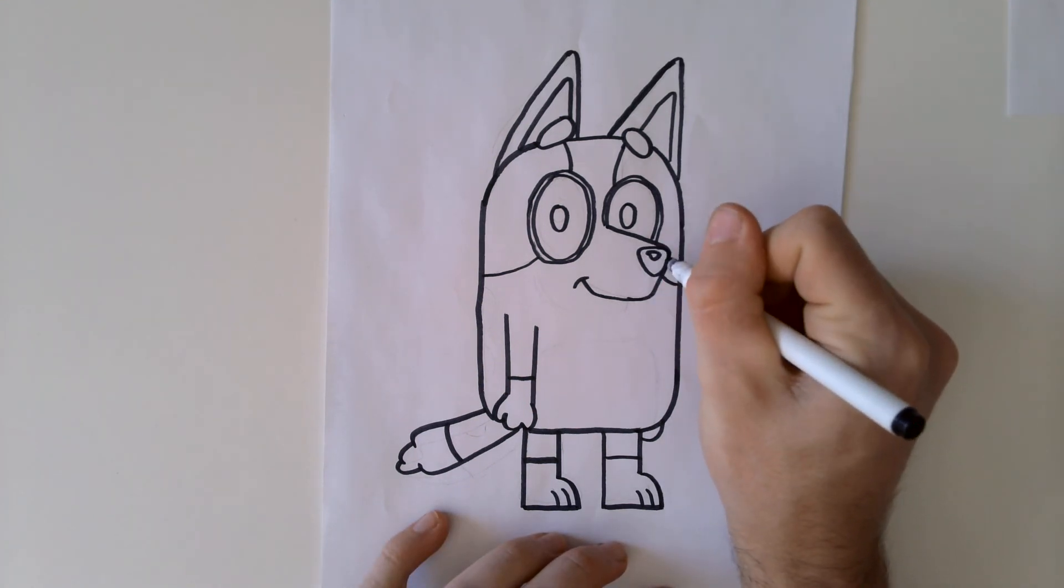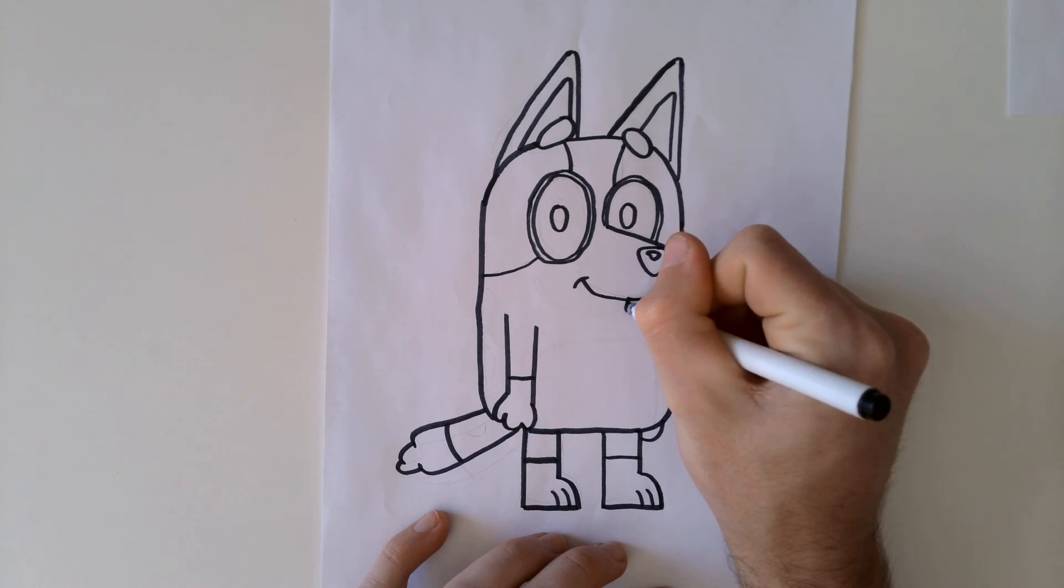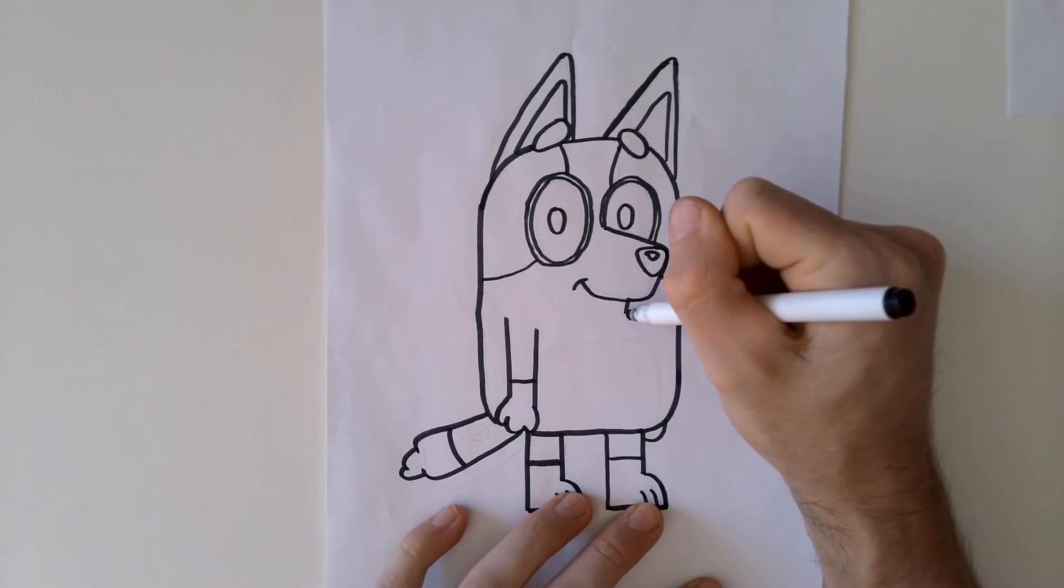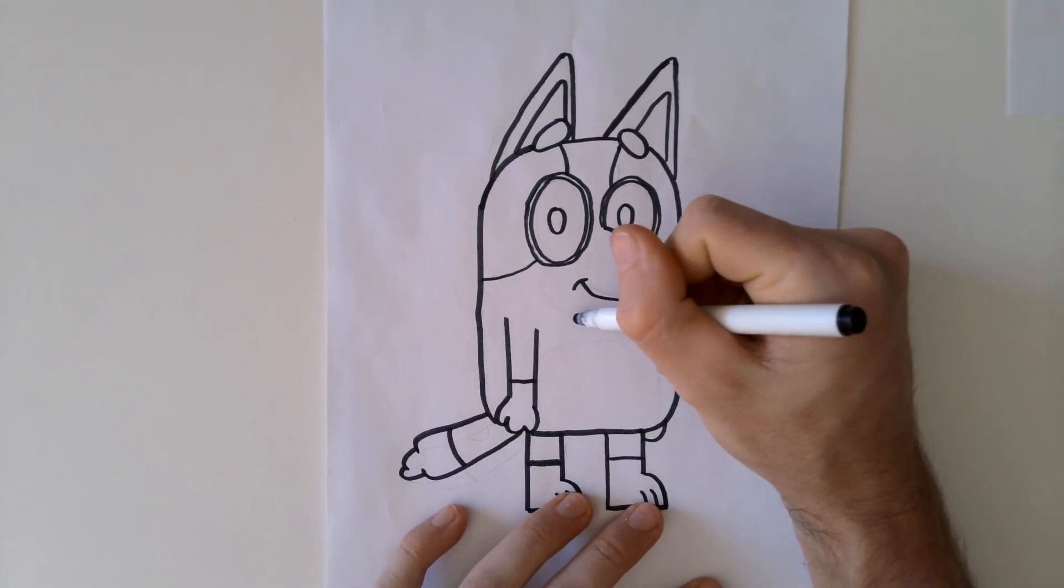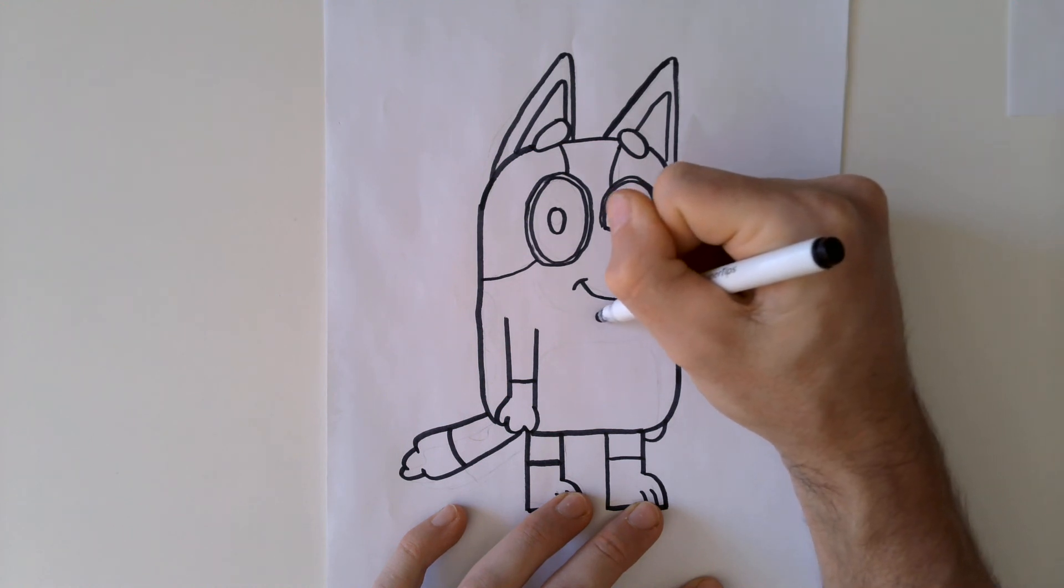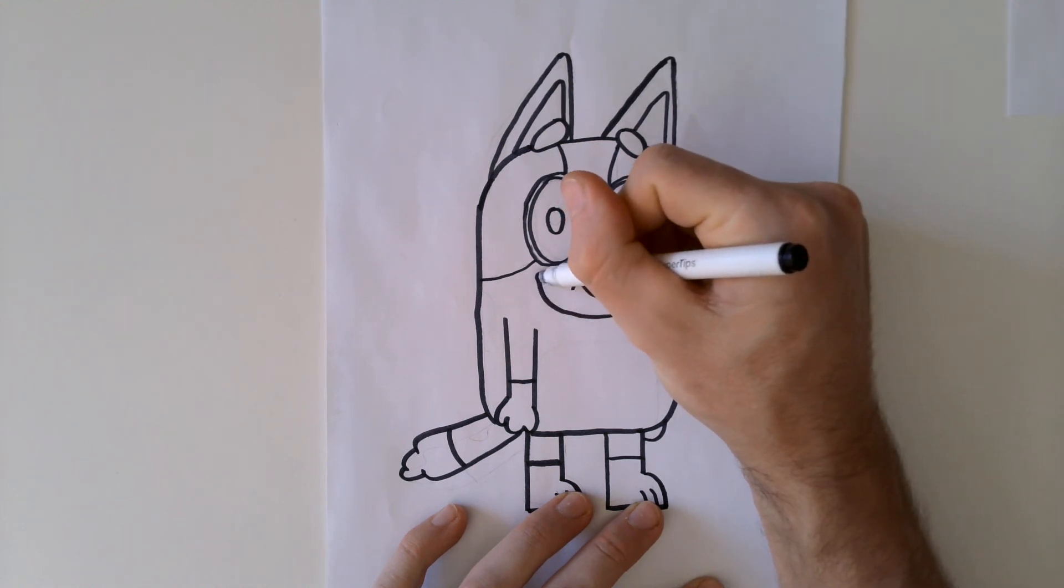Now here, we've got the snout. We actually want to do a little straight line there, for Bluey's mouth. And then we're going to do a line from the bottom of the mouth, all the way across and around to the eye. So I'm just going to go like this. Nice, big, curvy line. Perfect.